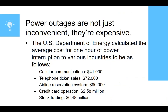The U.S. Department of Energy calculated that the average cost for one hour of power interruption to various industries is significant: one hour of loss to cellular communications costs about $41,000; telephone ticket sales, about $72,000; airline reservations, about $90,000; credit card operations, about $2.58 million; and stock trading loses about $6.48 million in a single hour of power outage.